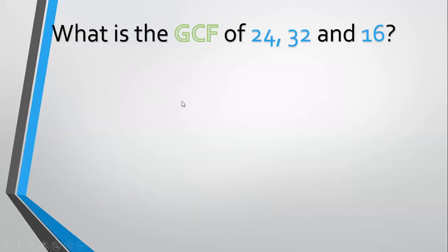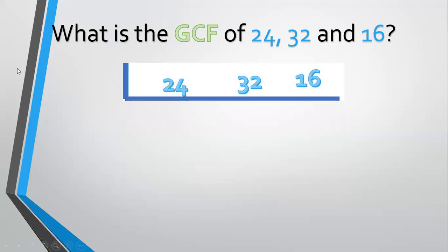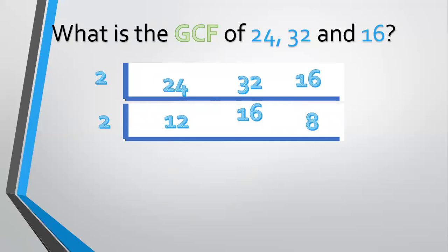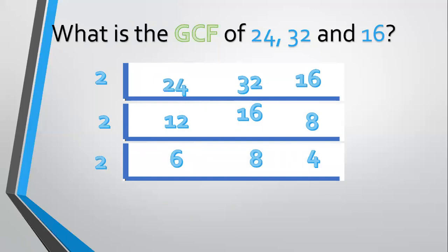Another one — how about 24, 32, and 16? List them: 24, 32, and 16. The common factor is 2. 24 divided by 2 equals 12. 32 divided by 2 equals 16. 16 divided by 2 equals 8. There's still a common factor of 2. 12 divided by 2 equals 6. 16 divided by 2 equals 8. 8 divided by 2 equals 4. Still another common factor of 2: 6 divided by 2 equals 3, 8 divided by 2 equals 4, 4 divided by 2 equals 2. Now 3, 4, and 2 have no more common factor, so we multiply: 2 times 2 times 2 equals 8. The GCF equals 8.